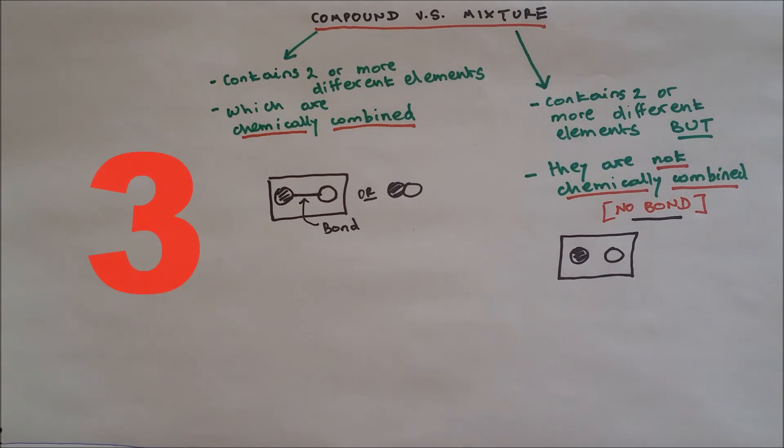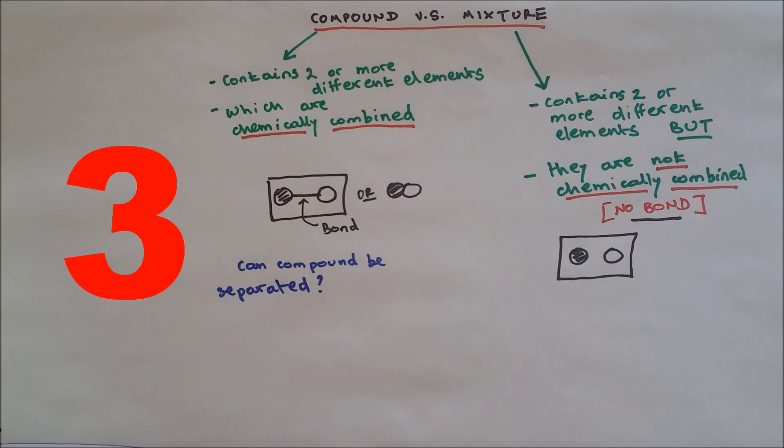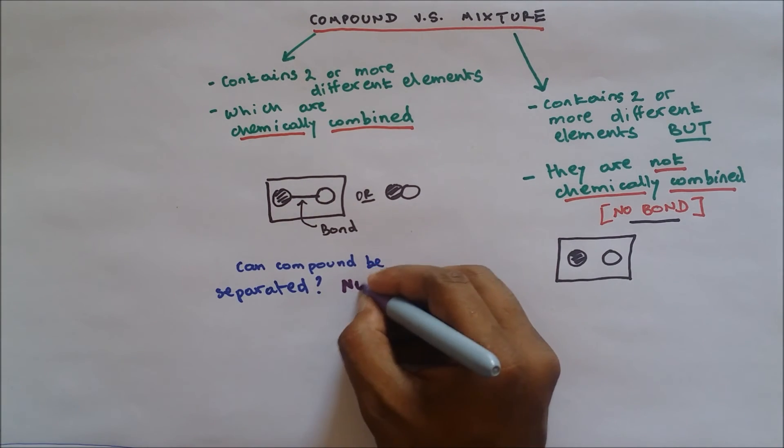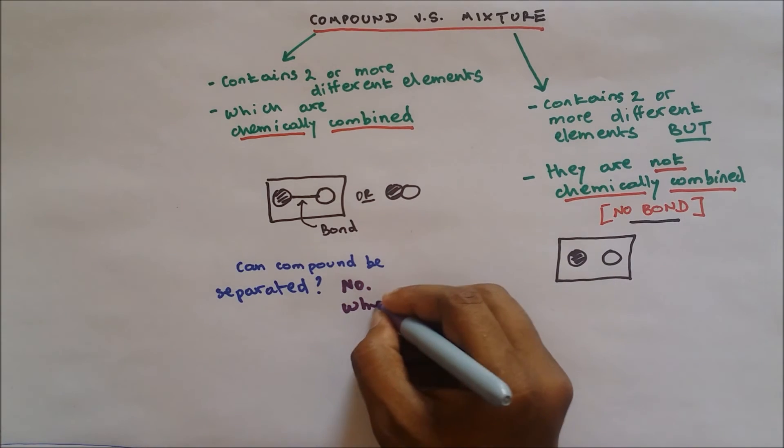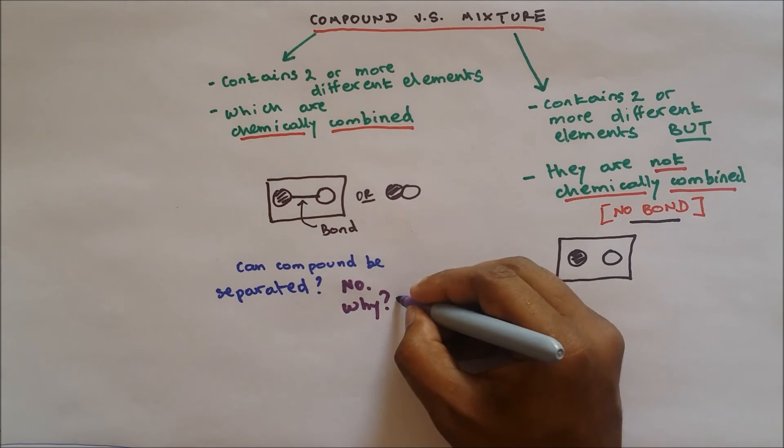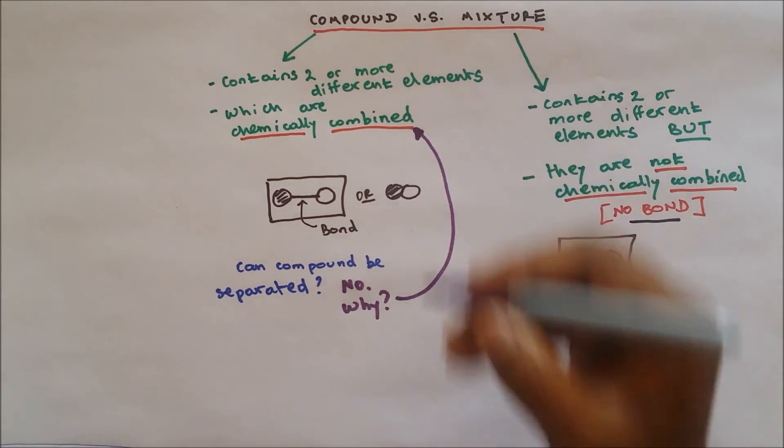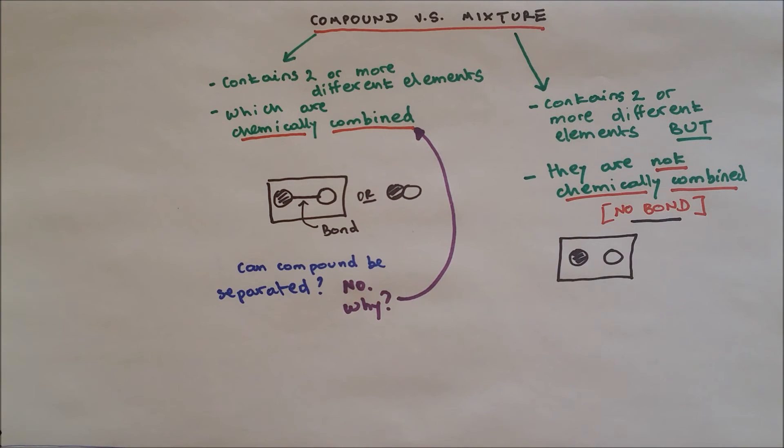Now, can compound be separated? The answer is no. Why? It's because the two different atoms are chemically combined.